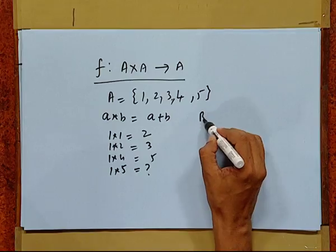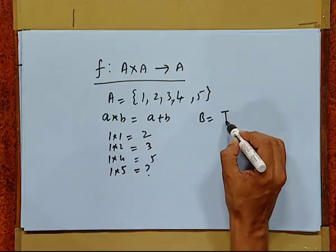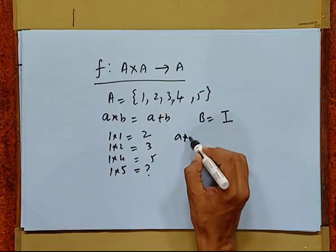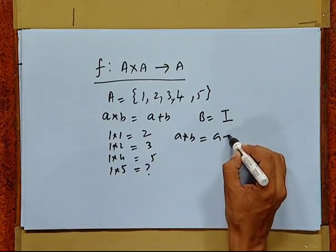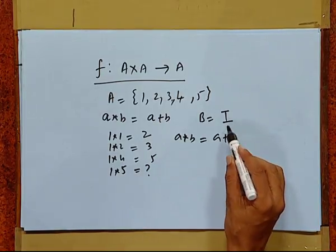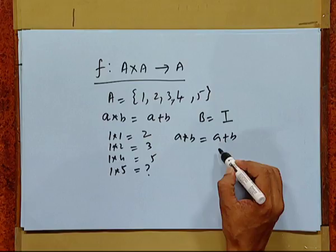But with a slight modification we can make it binary. Suppose our set B is the set of all integers. In this case, the same operation A star B = A plus B does make a binary operation because the output of the two elements is ultimately a member of this set B. So essentially, for any binary operation the output has got to be inside the set.